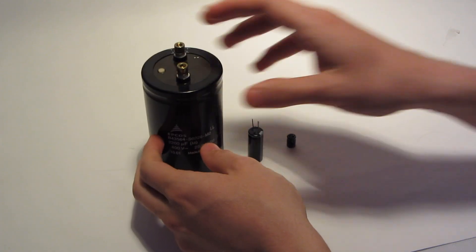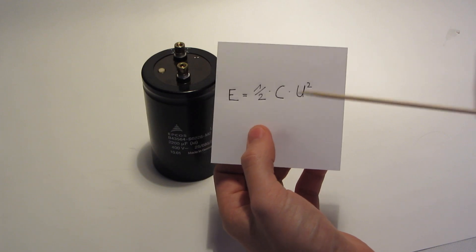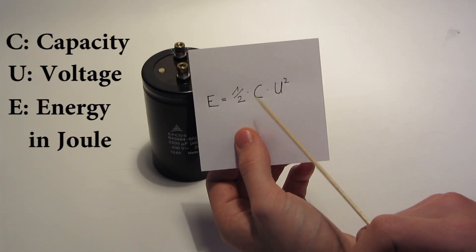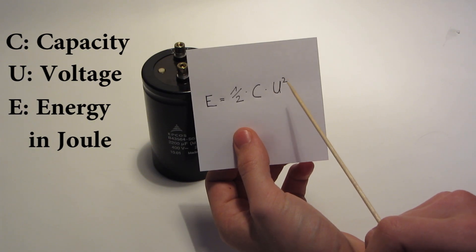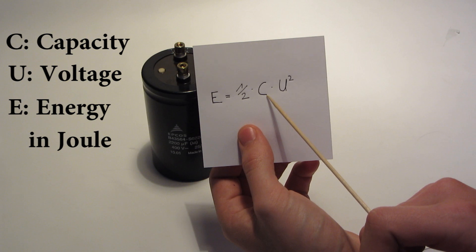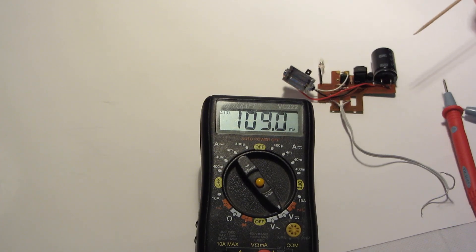If you want to know how much energy there is on your capacitor, it's electrical energy. It's 0.5 times C times U squared, C being the capacity of your capacitor and U being the voltage.